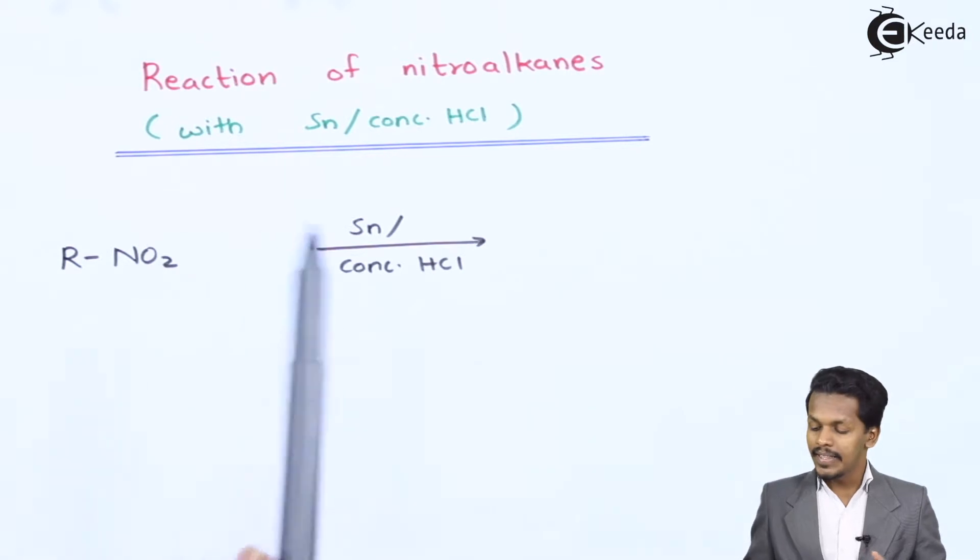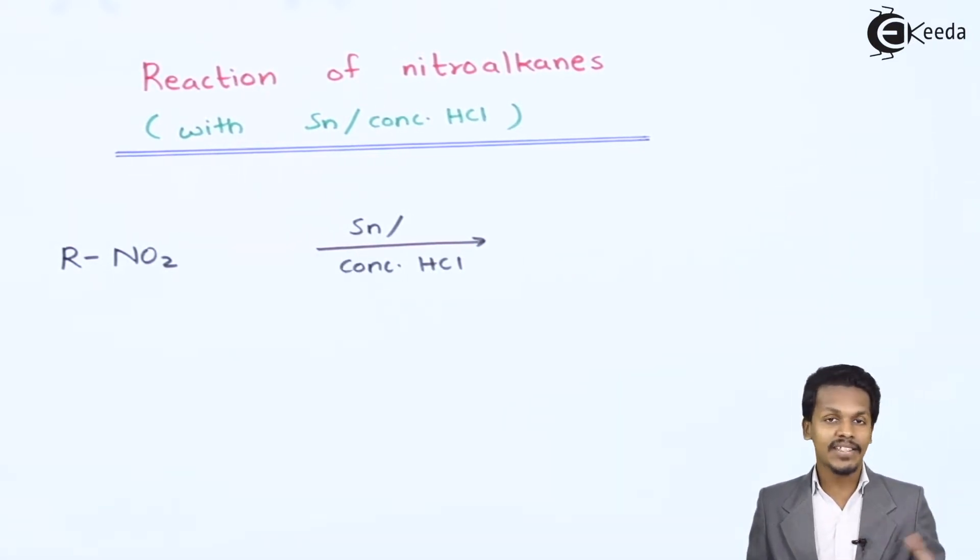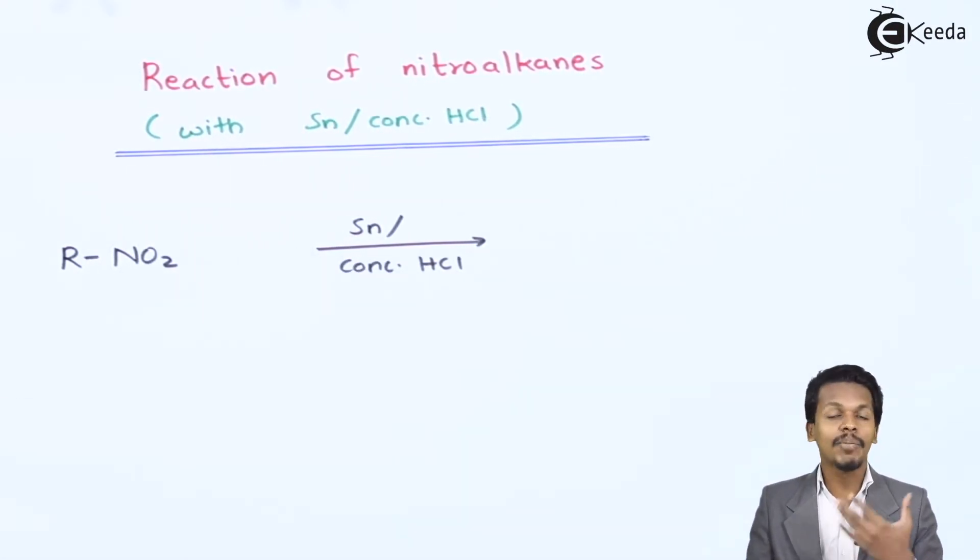In this case the concentrated HCl will react with tin to produce nascent hydrogen. That is the reason that whenever concentrated HCl is reacting with tin it will produce nascent hydrogen.